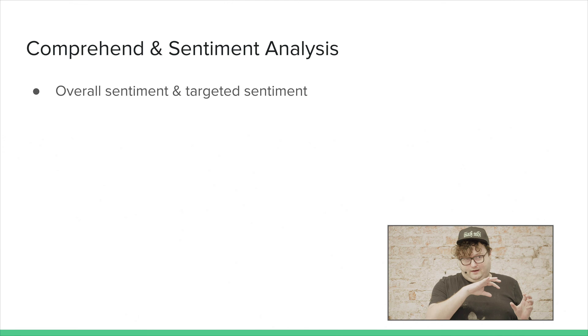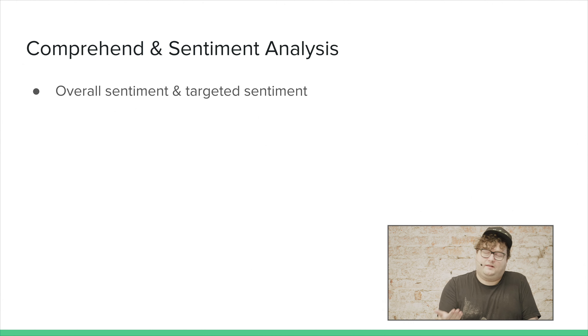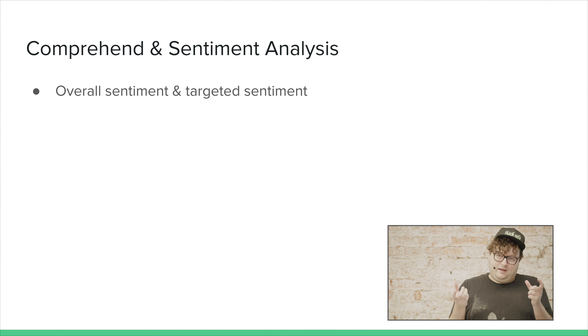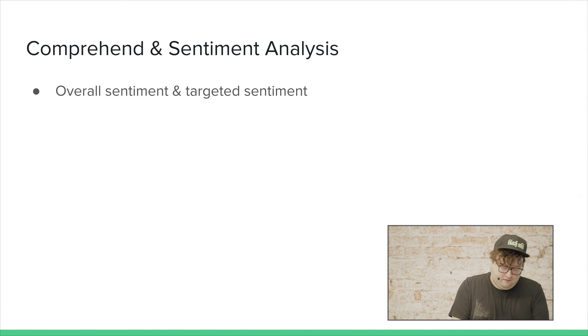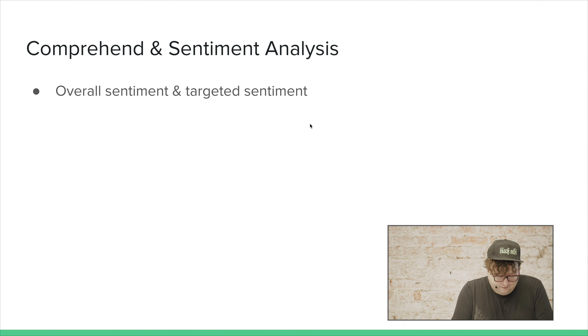Comprehend can look at two things with sentiment. It can look at overall sentiment — if you give it a blob of text, it'll look at the whole thing as one unit and calculate a sentiment. It can also do targeted sentiment, using features like finding entities and key phrases, and then figure out the sentiment of when you refer to them. For example, 'the salad was great, but the pizza was horrible' — it would detect pizza as negative sentiment and salad as positive sentiment.